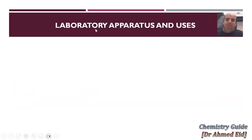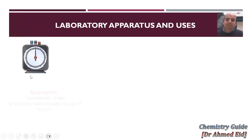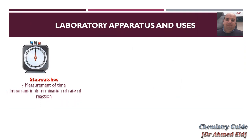We will start talking about the laboratory apparatus and uses. At the beginning, we have to talk about the stopwatch. Stopwatch is used in measurement of time and determination of rate of reaction. You have to know that the stopwatch is very important — even if the question doesn't mention measuring time, for determining rate of reaction you have to use a stopwatch.